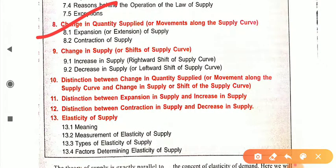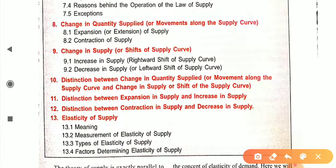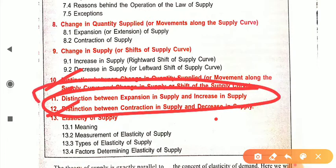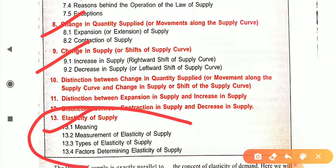Today we are going to cover change in quantity supplied, which is known as movement along the supply curve, and change in supply, which is also known as shifting. Topics like the distinction between extension and increase in supply, contraction and decrease in supply are not in your syllabus, so you can leave those. We only need to cover these two topics, plus elasticity of supply — for which I will make a separate video.